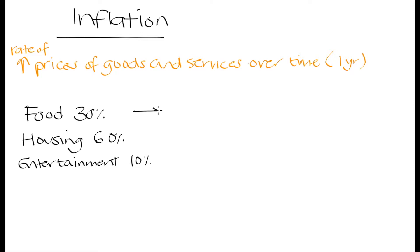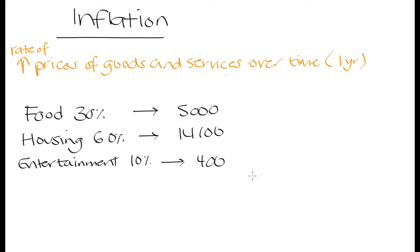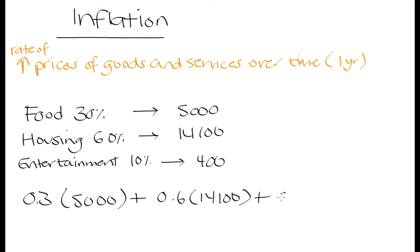Let's say the average price of food in that year was 5,000 Rand, the average price of housing was 14,100 Rand, and the price of entertainment was 400 Rand. So if we were trying to come up with a price level for this basket of items, what we could do is take 30% (0.3) of 5,000 plus 60% of 14,100 plus 10% of 400. If we put this into a calculator, we get an answer of 10,000. So in this first year, the average cost of this basket was 10,000 Rand.